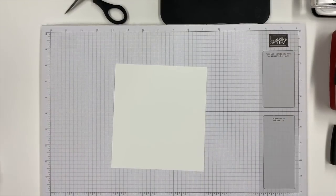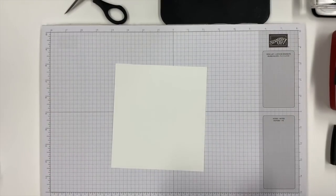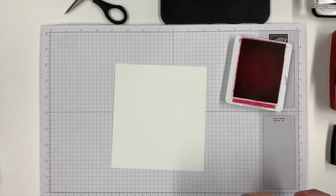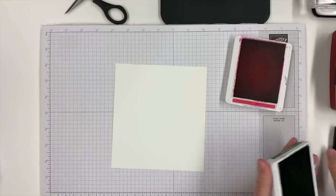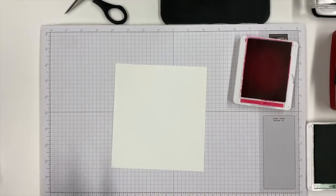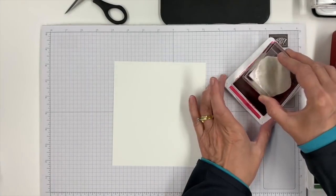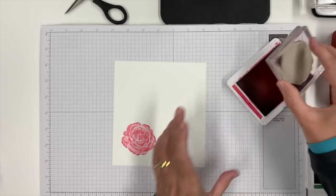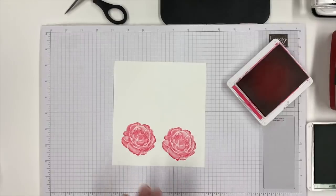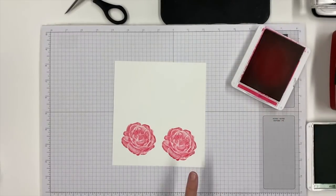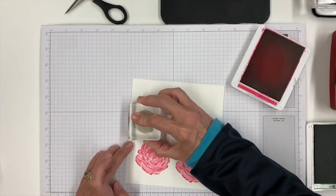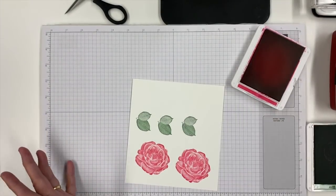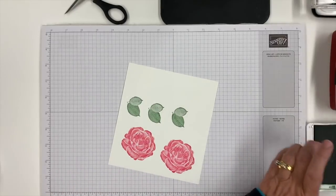This card has lots of parts and pieces that we're going to do, and then at the end we'll put it all together. There are no dies for this one, so we're going to have to do a little bit of fussy cutting. I'm starting with a piece of basic white and we're going to stamp our images with melon mambo and garden green. We'll stamp three of our little sets of leaves here.